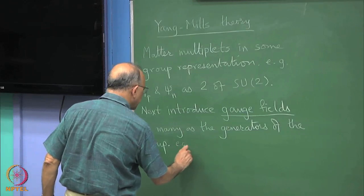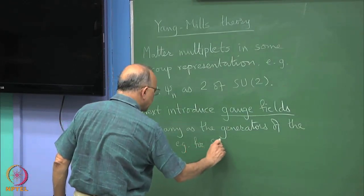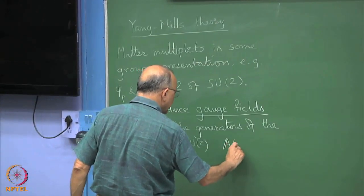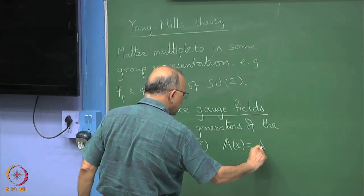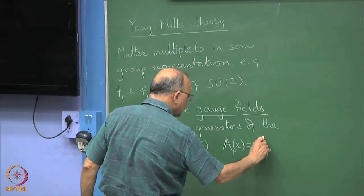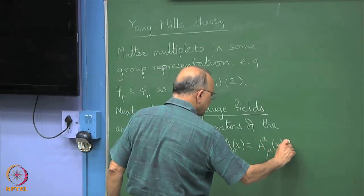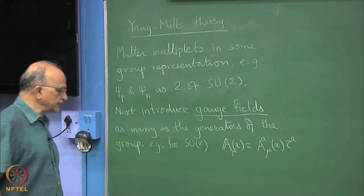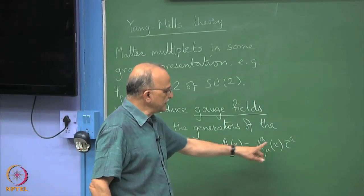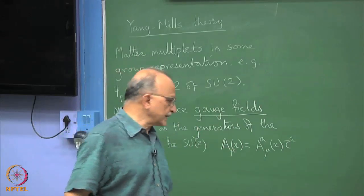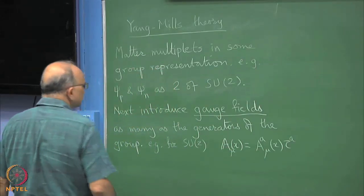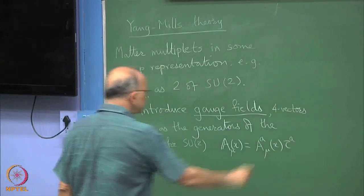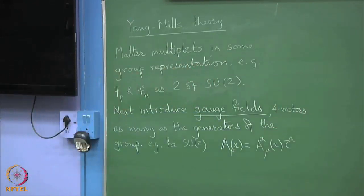So, for example, for SU(2), we need triplet tau, the tau A are generators. So, there are as many A mu fields as the four vector fields as there are, as many as the generators of the group.